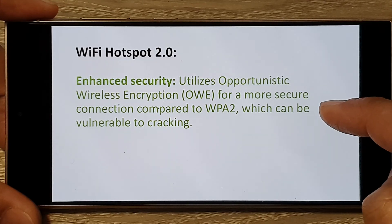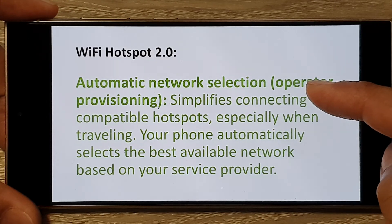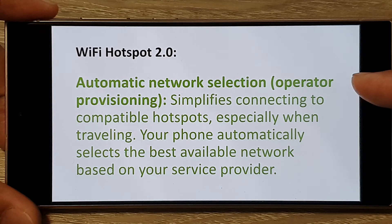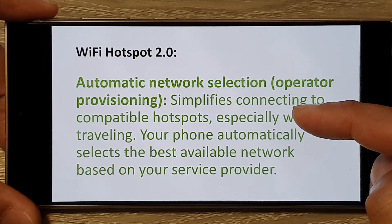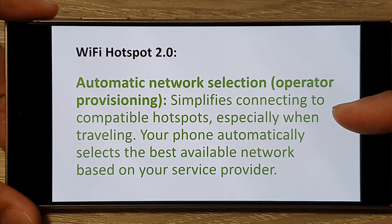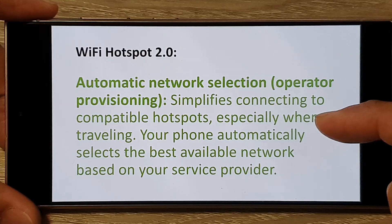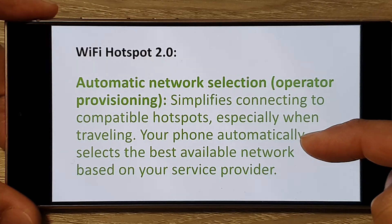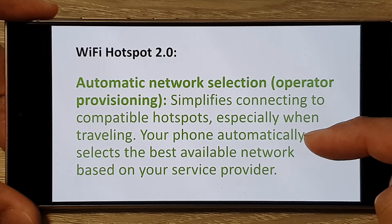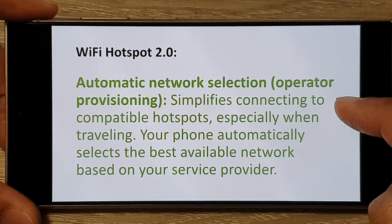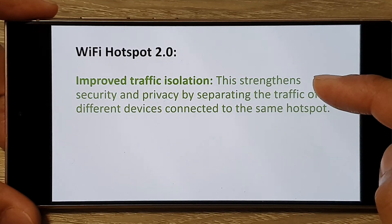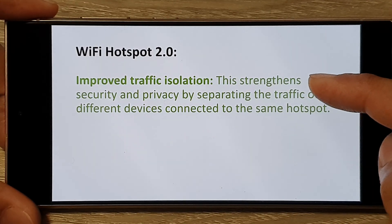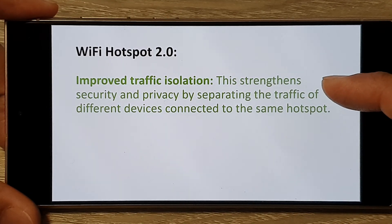Hotspot 2.0 utilizes Opportunistic Wireless Encryption for a more secure connection compared to WPA2, which can be vulnerable to cracking. It also includes automatic network selection, which simplifies connecting to compatible hotspots especially when traveling — your phone automatically selects the best available network based on your service provider.